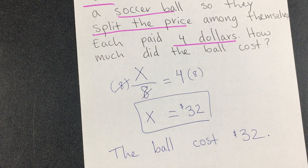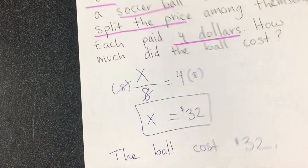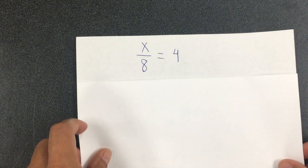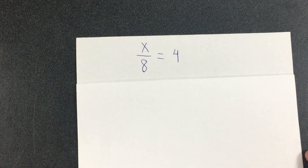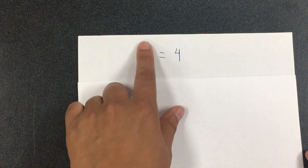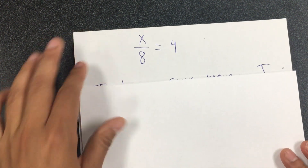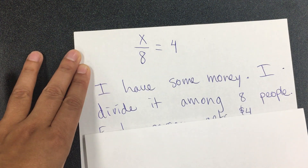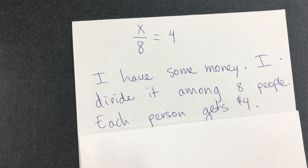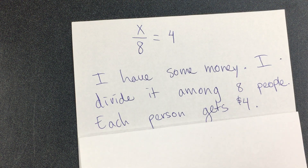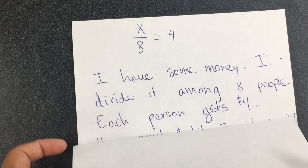The next part is where you have to create your own scenarios. This is similar to the previous example. This is what students came up with: 'I have some money. I divided it among eight people. Each person gets four dollars.' It's very similar to the ball problem, but here it's about dividing money among themselves rather than paying for something.